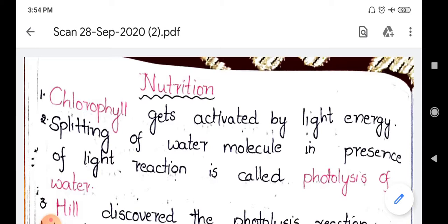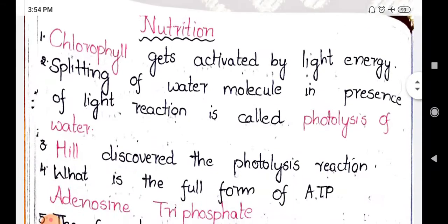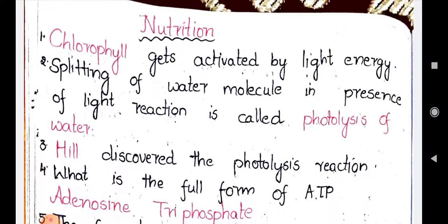The third blank: 'dash discovered the photolysis reaction.' Hill discovered the photolysis reaction. In photosynthesis there are two important reactions: the light reaction and the dark reaction. Robert Hill discovered the light reaction and also discovered the photolysis reaction. Photolysis reaction occurs in the light reaction of photosynthesis. So the answer is Hill.